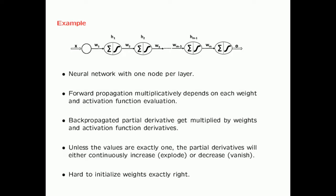The real issue is what happens during backward propagation, because that is where you are computing the gradients. Typically, in each backward propagation step, you multiply by the weights and the activation function derivatives. So unless the product of these two values is exactly one — which typically it will not be — they will all be either less than one or they will all be either more than one.